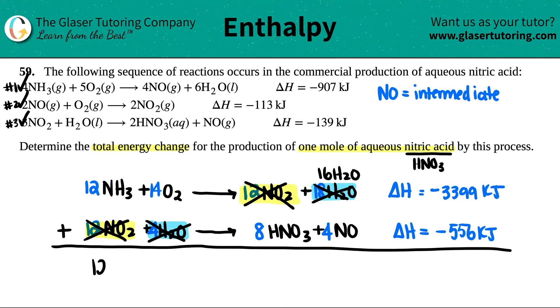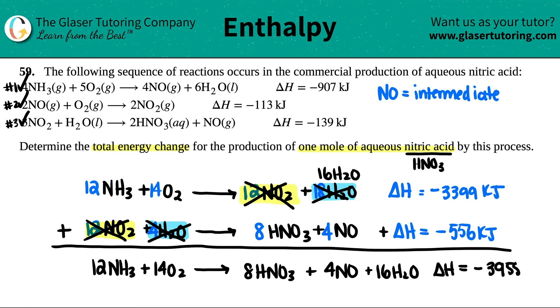My final equation would be 12 NH3 plus 21 O2 yields 8 HNO3 plus 4 NO plus 16 H2O. And now my delta H value has to be added up as well. Negative 3399 plus negative 556 equals negative 3955 kilojoules per mole.